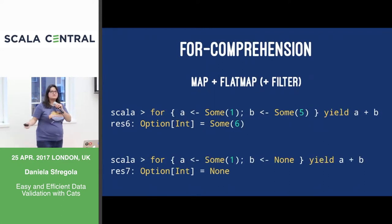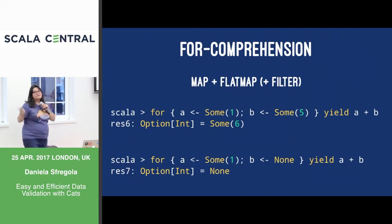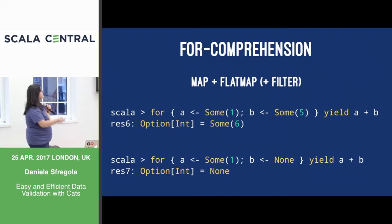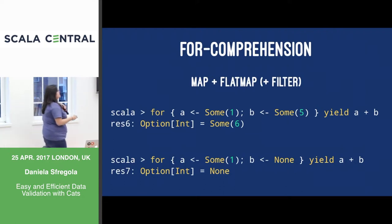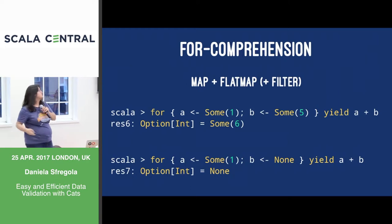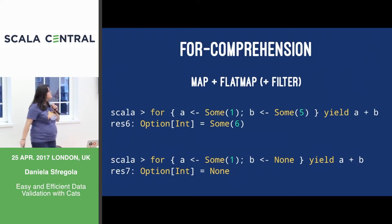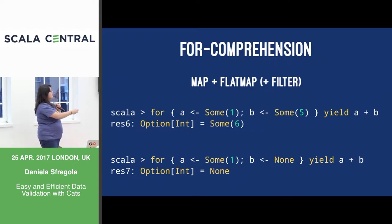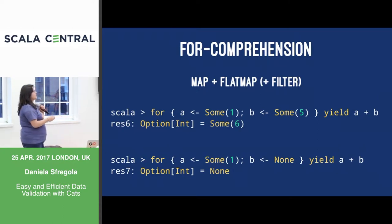And syntactic sugar in Scala: if you have a map and a flatMap, you can write a for comprehension where you can just write things in a row and you're basically concatenating all the containers together. In the first example, we have Some(1), so "a" is going to be 1. Then Some(5), so "b" is going to be 5, and then we combine both of them. What happens if one of the two values in my chain is None? Well, the chain is going to break, so the whole thing is going to be None.